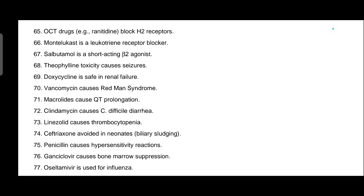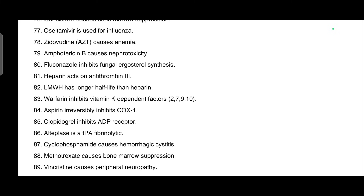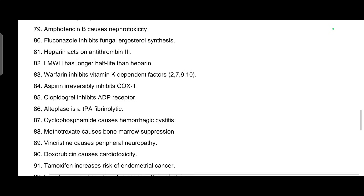Ganciclovir causes bone marrow suppression. Oseltamivir is used for influenza. Amphotericin B causes nephrotoxicity. Fluconazole inhibits fungal ergosterol synthesis. Heparin acts on antithrombin III. Low molecular weight heparin has a longer half-life than unfractionated heparin. Warfarin inhibits vitamin K-dependent factors 2, 7, 9, and 10. Aspirin irreversibly inhibits COX-1. Clopidogrel inhibits ADP receptors. Alteplase is a tPA — a fibrinolytic agent.